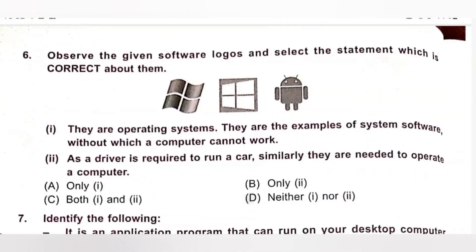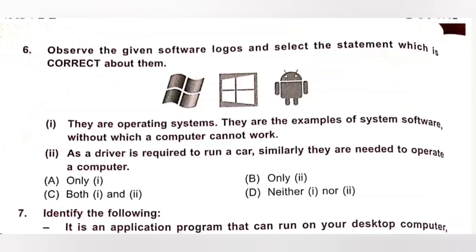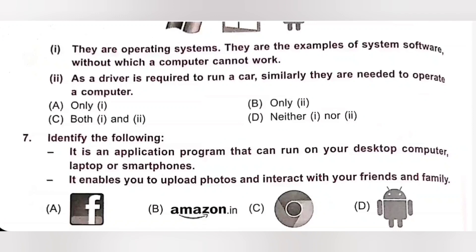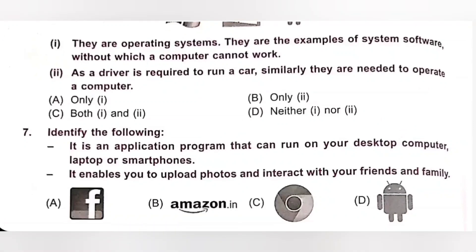Sixth. Observe the given software logos and select the correct statement about them. Statement 1: They are operating systems — examples of system software without which a computer cannot work. Statement 2: As a driver is required to run a car, similarly they are needed to operate a computer. The given logos are Windows 7, Windows 8, and Android operating system. Both statements are correct. Option C — both one and two — is the correct answer.